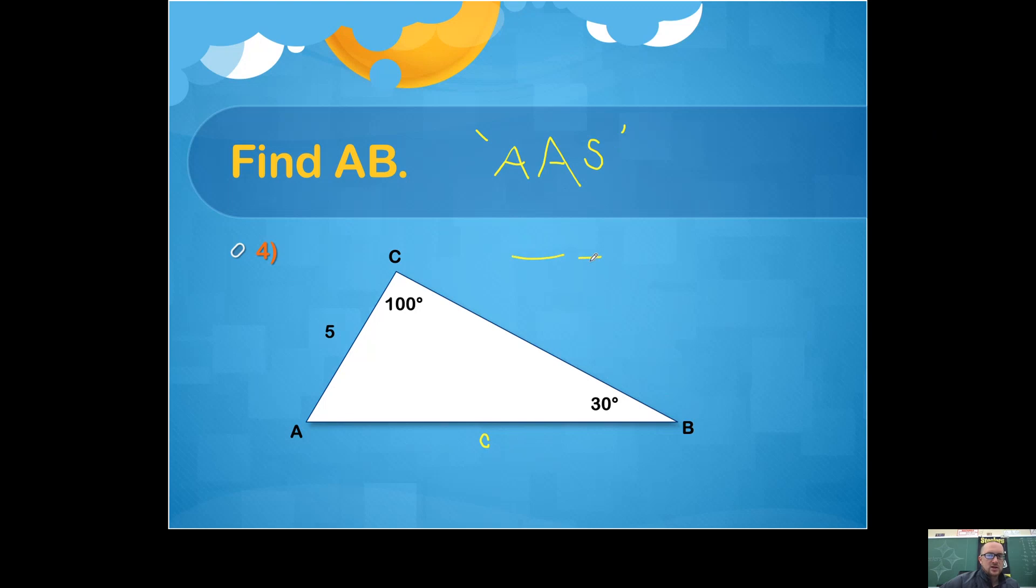Law of sines is just a proportion. Where if you want to find this lowercase c, put that in your numerator, and you're going to divide that by the sine of the angle that's opposite of it. So in this particular case, you're going to divide by sine of 100.